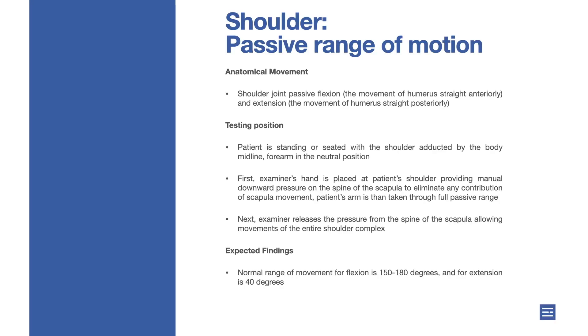Shoulder passive range of motion. Anatomical movement: shoulder joint passive flexion and extension.